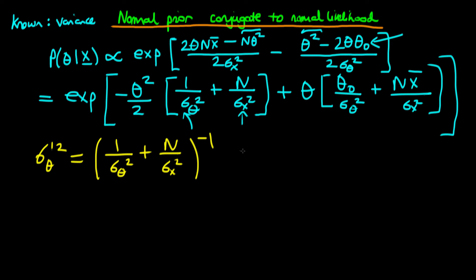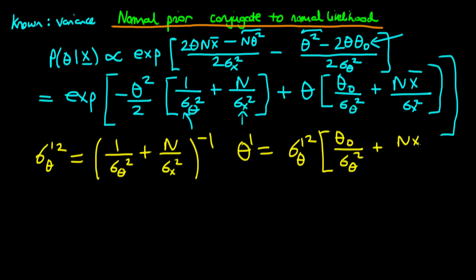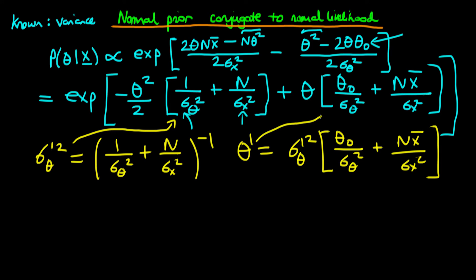We're also going to introduce a new parameter which I'm going to call theta prime, defined as being equal to sigma theta prime squared — this parameter we've introduced — times theta zero divided through by sigma theta squared, plus n x-bar over sigma x squared. This parameter introduction wasn't arbitrary: sigma theta prime squared corresponds to this term to the power minus 1, and theta prime exactly corresponds to this term if we take the sigma prime theta squared underneath the theta prime.